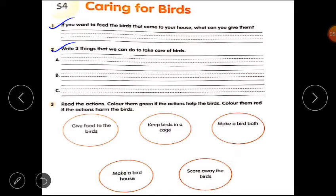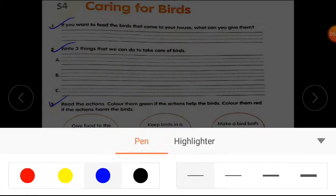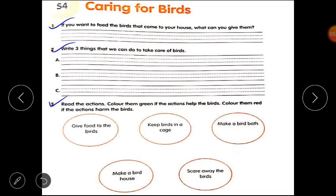Next question is Question No. 3: Read the actions. Color them green if the actions help the birds. Aapko un actions ko green color se color karna hai jo bhi birds ki help karte hain. Clear? And color them red if the actions harm the birds. Aur un actions ko aapko red color se color karna hai jo ki birds ko harm karte hain.